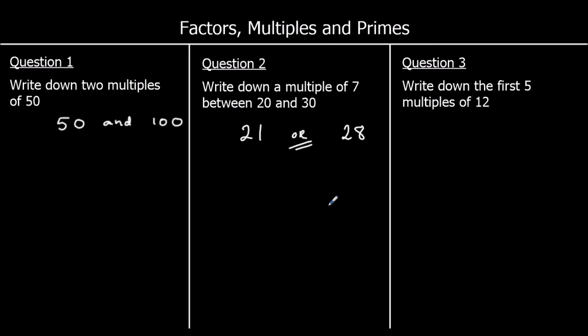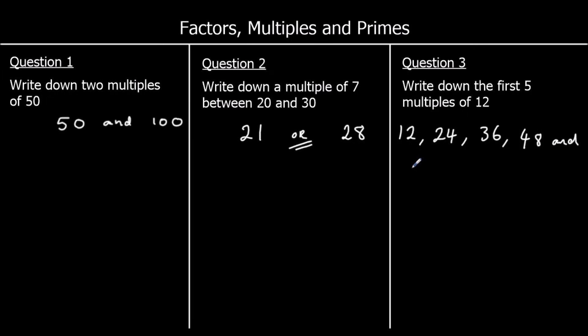And question 3: write down the first 5 multiples of 12 — the first 5 numbers in the 12 times table. So 1 twelve is 12, 2 twelves are 24, 3 twelves are 36, 4 twelves are 48, and 5 twelves are 60.